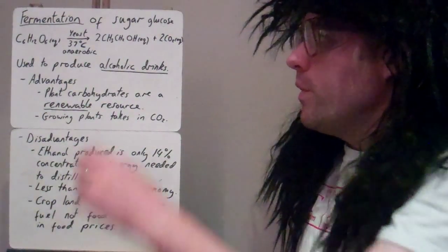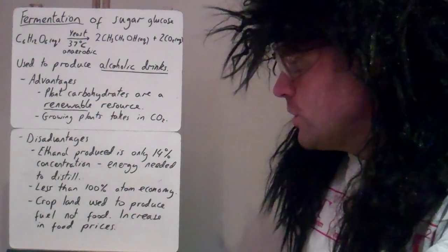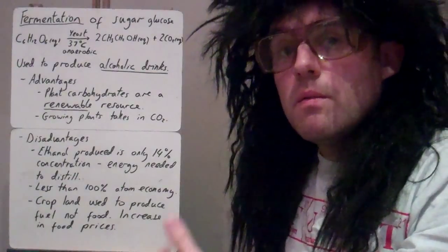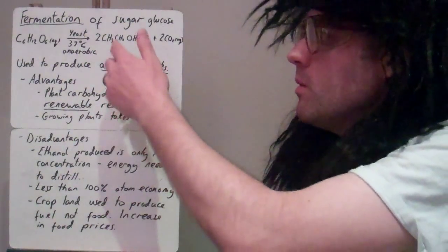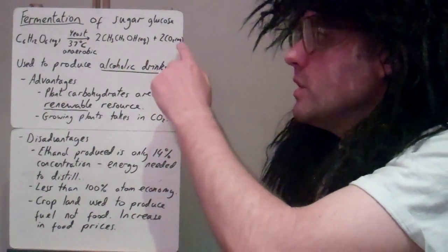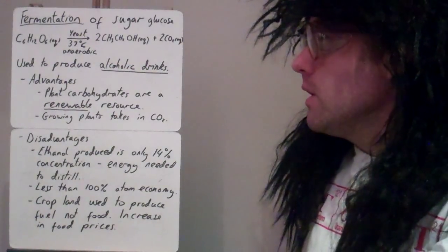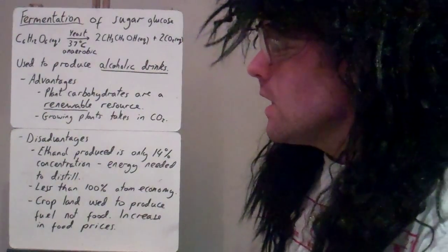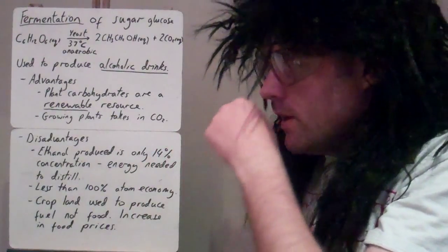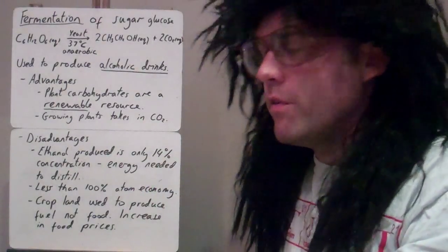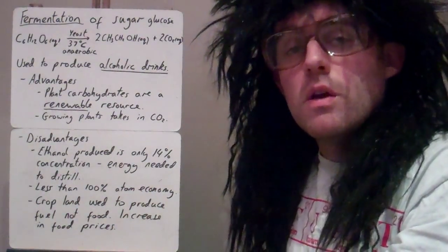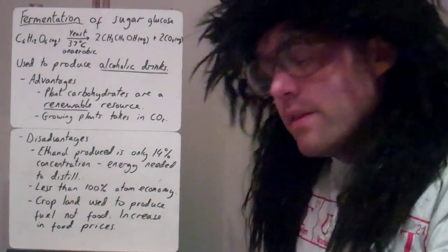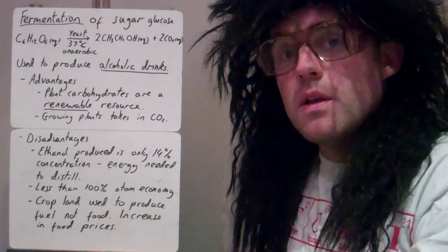Disadvantages: the ethanol produced is only 14% concentration, so if you wanted to get the ethanol by itself, you'd have to distill it to remove it from the aqueous solution — remove it from the water — and that takes a lot of energy. The atom economy here is not 100% because we're producing carbon dioxide as well. To improve atom economy, we'd have to find a use for the CO2. Also, although it is a renewable resource, to grow enough plants to produce enough ethanol we'd have to take up cropland, so land originally used to grow crops for food would be used to grow plants for fuel instead, causing food prices to increase — affecting the poorest people the most.